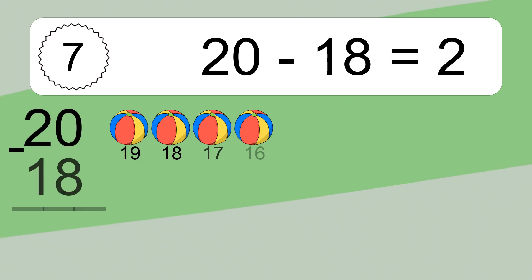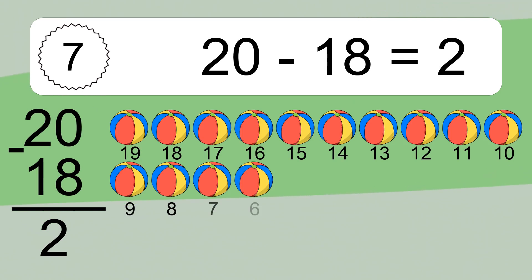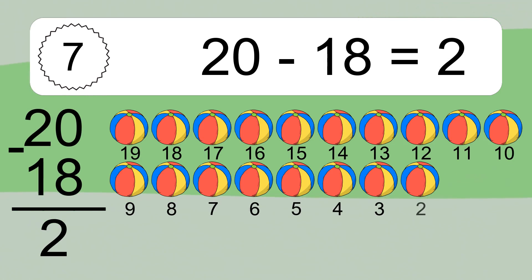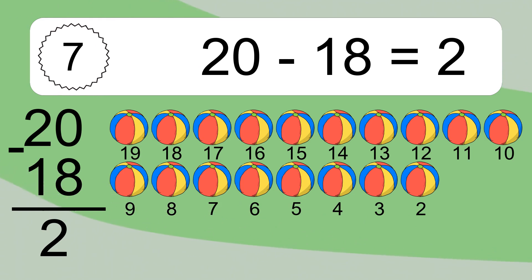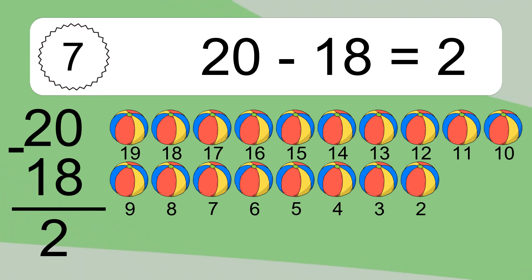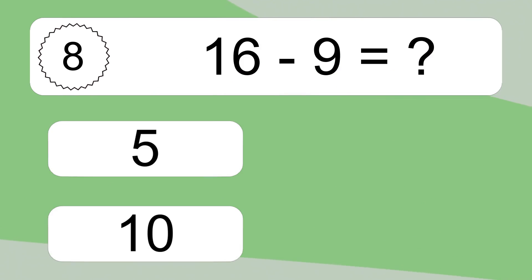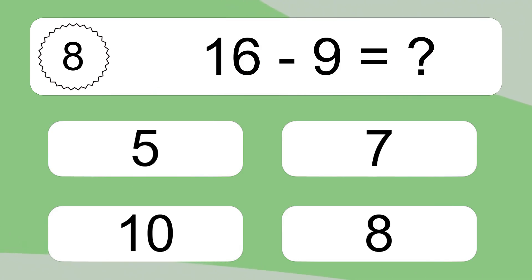20 minus 18 equals 2. Let's count it: 19, 18, 17, 16, 15, 14, 13, 12, 11, 10, 9, 8, 7, 6, 5, 4, 3, 2. 16 minus 9 equals what?